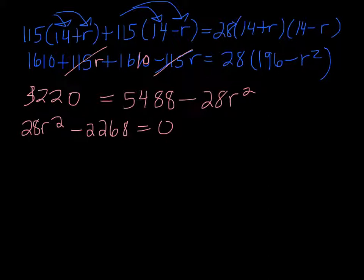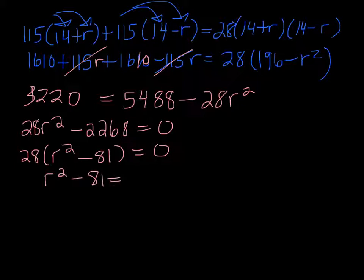Let's see if we can factor out. What's 2268 divided by 28? It's 81, so you can take a 28 out of both terms. If you divide both sides by 28, then you're just left with r squared minus 81 equals 0.